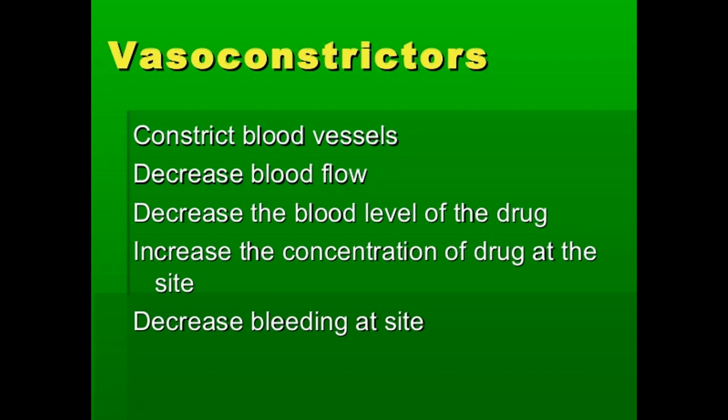The rationale for adding vasoconstrictors to local anesthetics: they constrict blood vessels, decrease blood flow, decrease blood levels of the drug, increase concentration at the injection site, and decrease bleeding at the site. These five points summarize why vasoconstrictors are used with local anesthetics.